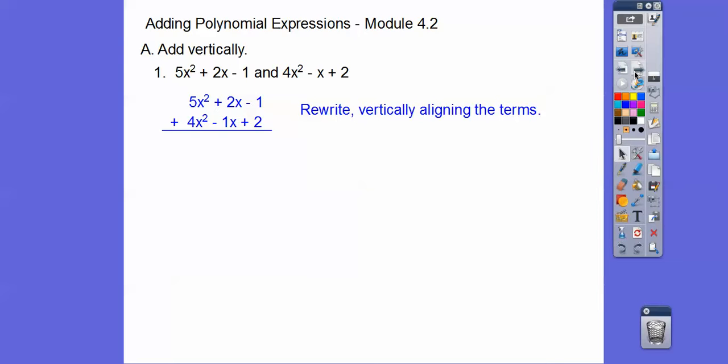Well, they all have the same terms, an x squared and x, and then a constant right here. So then we just add the coefficients. 5 plus 4 is 9. So there's 9 of these x squareds. 2 plus negative 1 is 1. So there's just 1x or just x, and then plus this 1 right there.